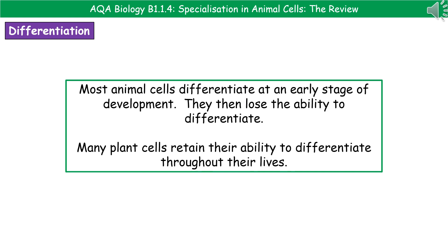There's a key difference between when this process of differentiation takes place in animals and in plants. In the case of animal cells, most animal cell differentiation occurs at an early stage of development, and by the time we're adults, we've lost a lot of the ability to differentiate. Whereas plants actually retain this ability to differentiate their cells throughout their lives.